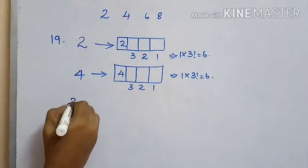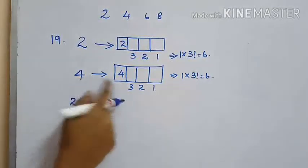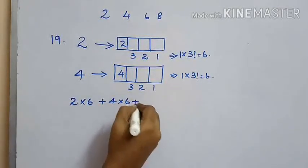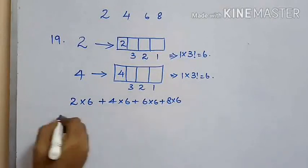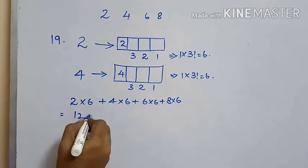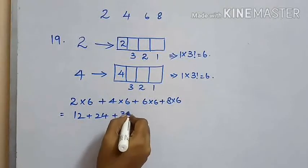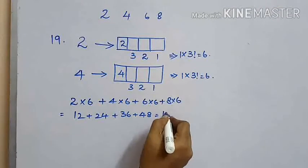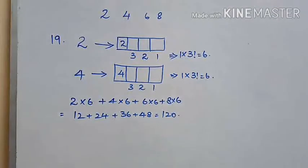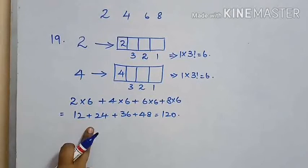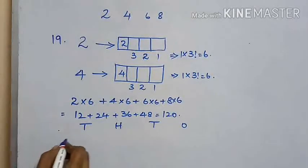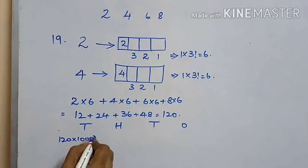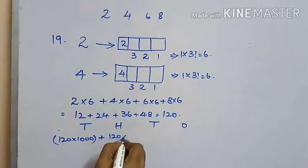Now let us find the sum of all the digits in each position: 6 into 2 plus 6 into 4 plus 6 into 6 plus 6 into 8, which equals 12 plus 24 plus 36 plus 48, which equals 120. So the sum of all digits in each position is 120.